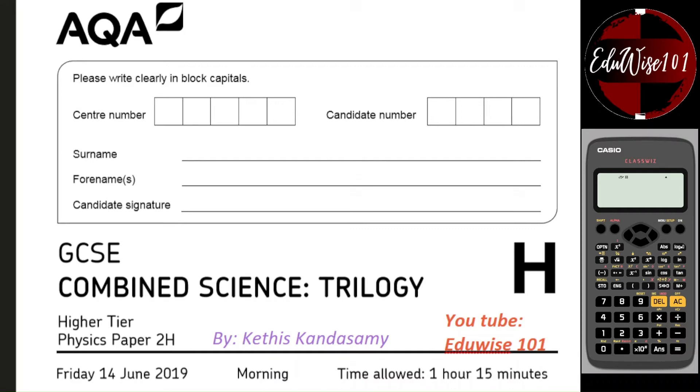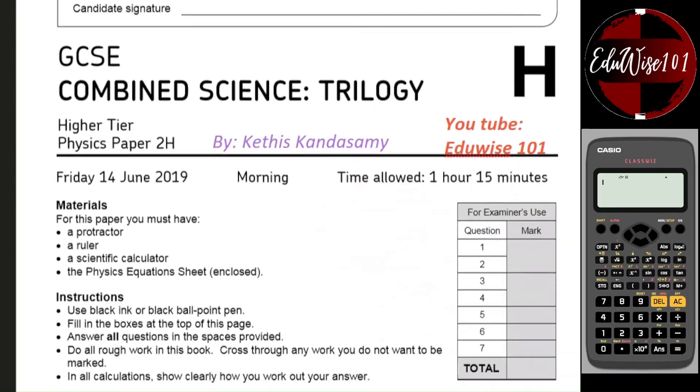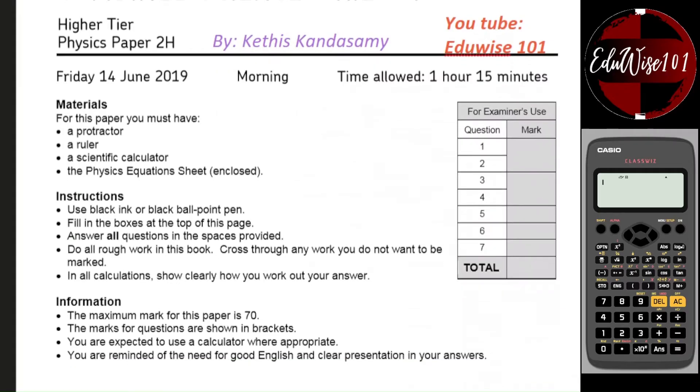Hello everyone, in this video I'm going to go through the AQA Combined Science Trilogy Physics Paper 2 Higher Tier. This was released in 2019 and this paper is one hour 15 minutes long and it's out of 70 marks.